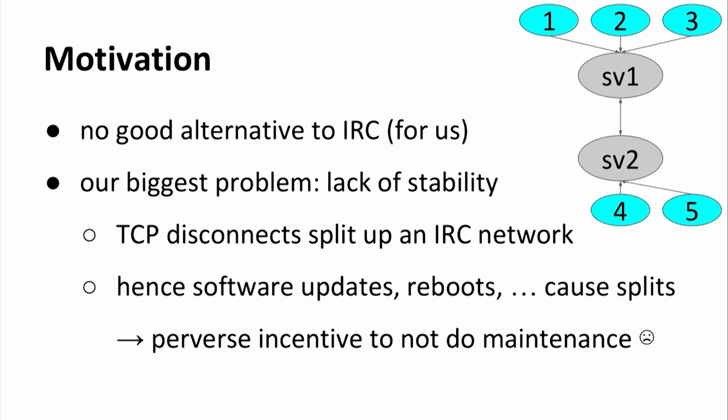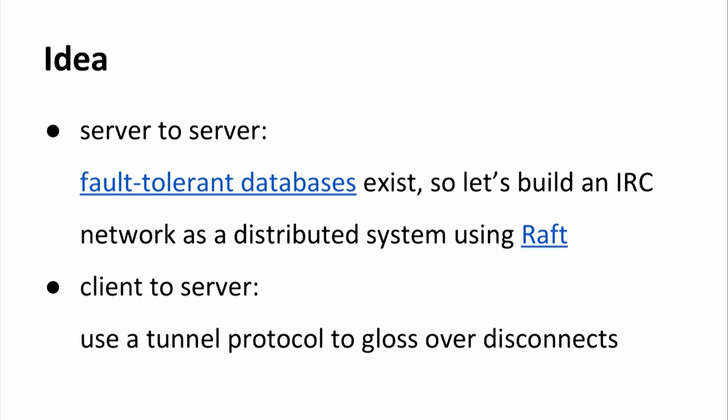The problem with IRC is that if any individual TCP connection dies, you have what's called a net split. In the case of a client-to-server connection, that means the client can no longer participate in the chat session. In the case of a TCP connection between servers, all of the clients connected to one server cannot participate any longer. This places a perverse incentive on maintainers because they can no longer do routine software updates, reboots, or network maintenance without disrupting the IRC network.